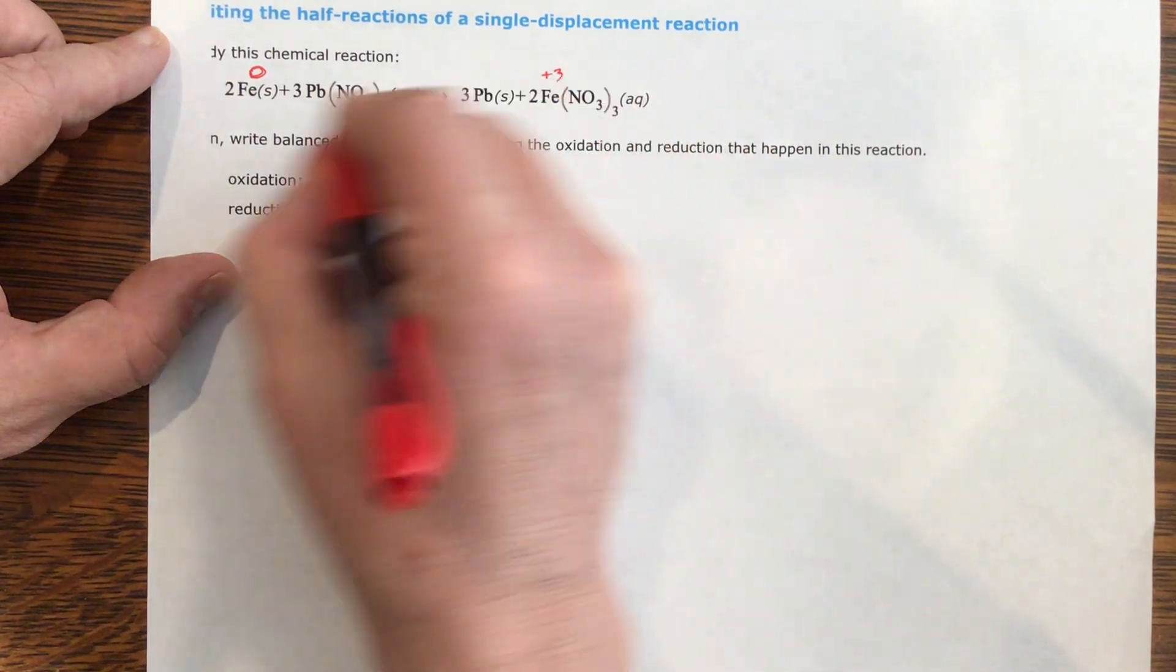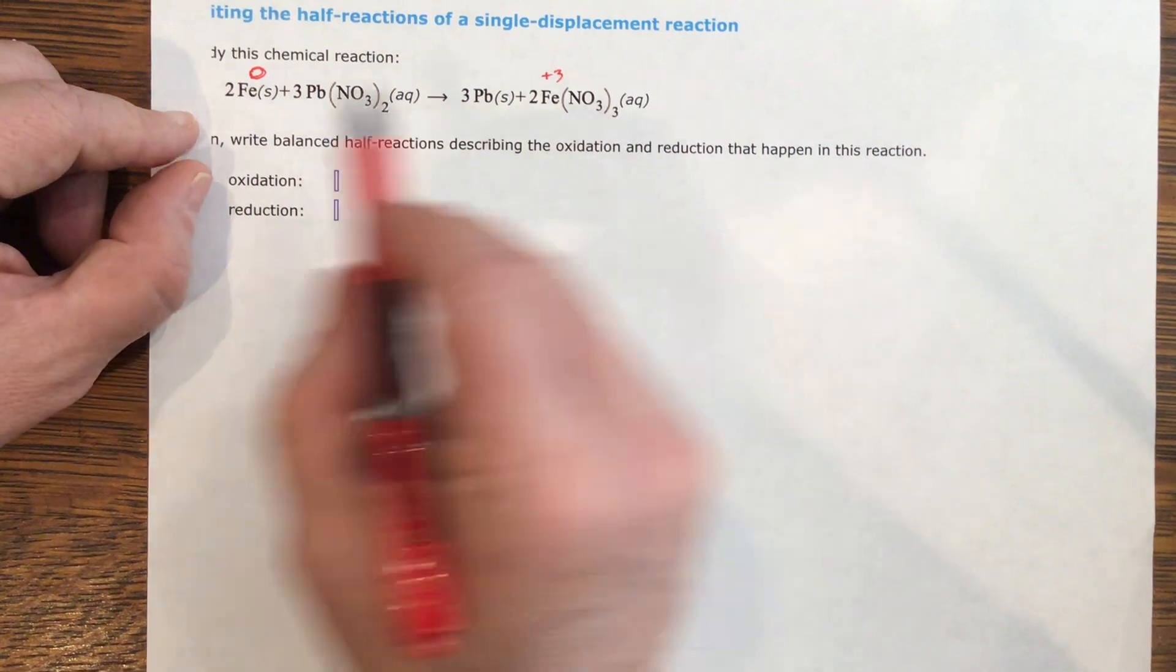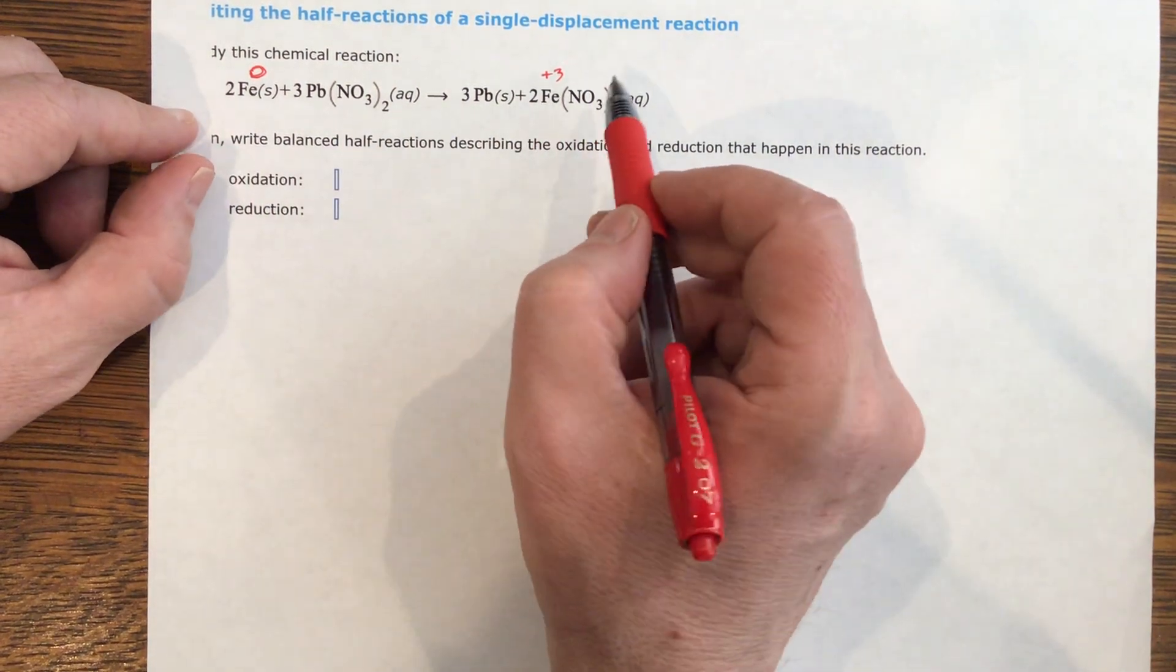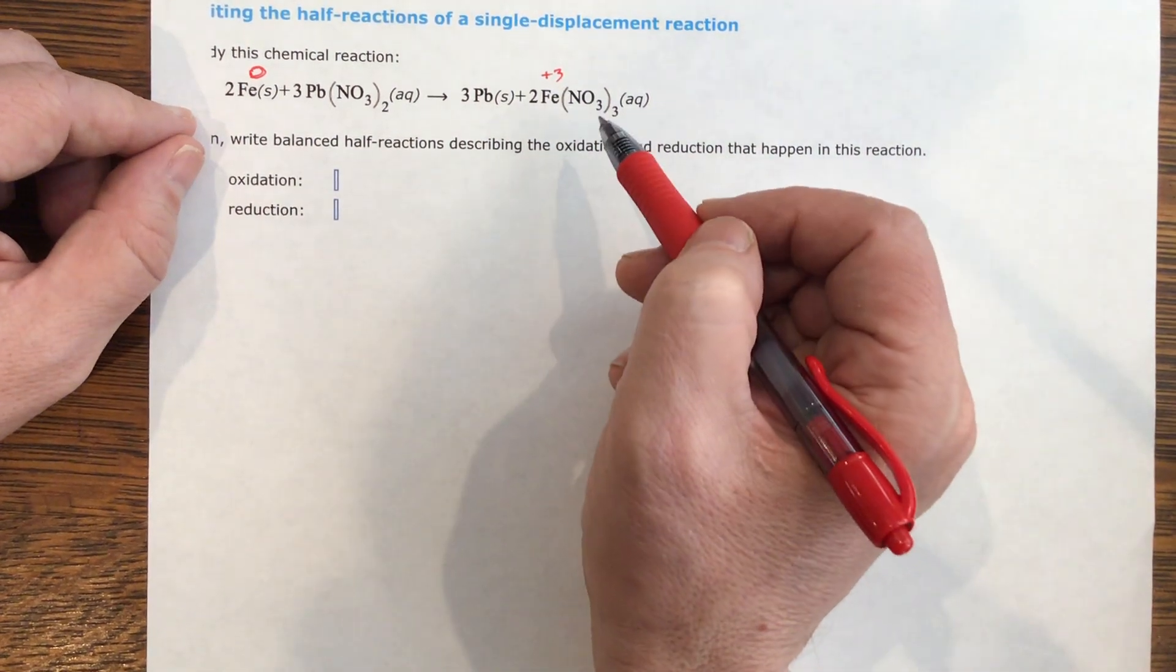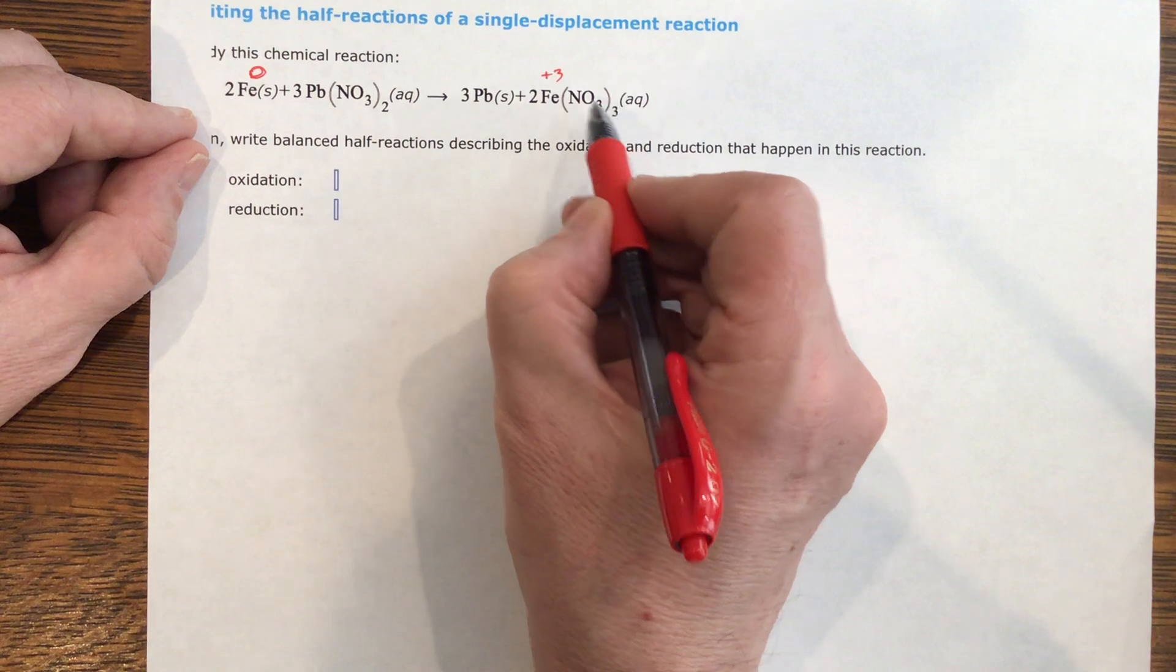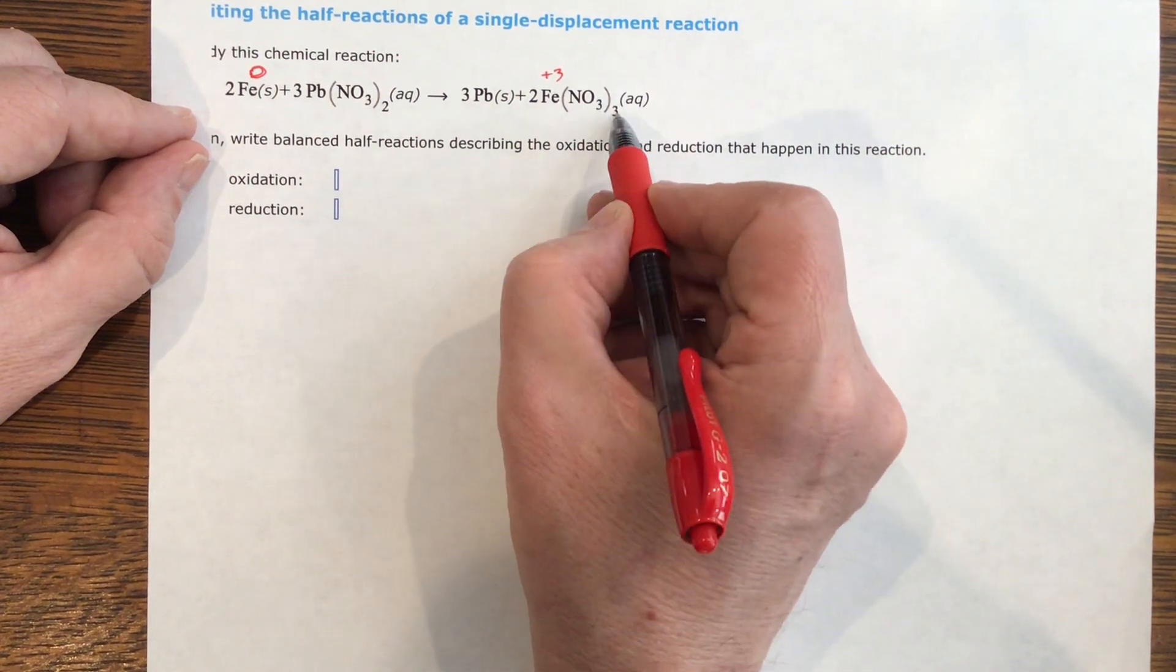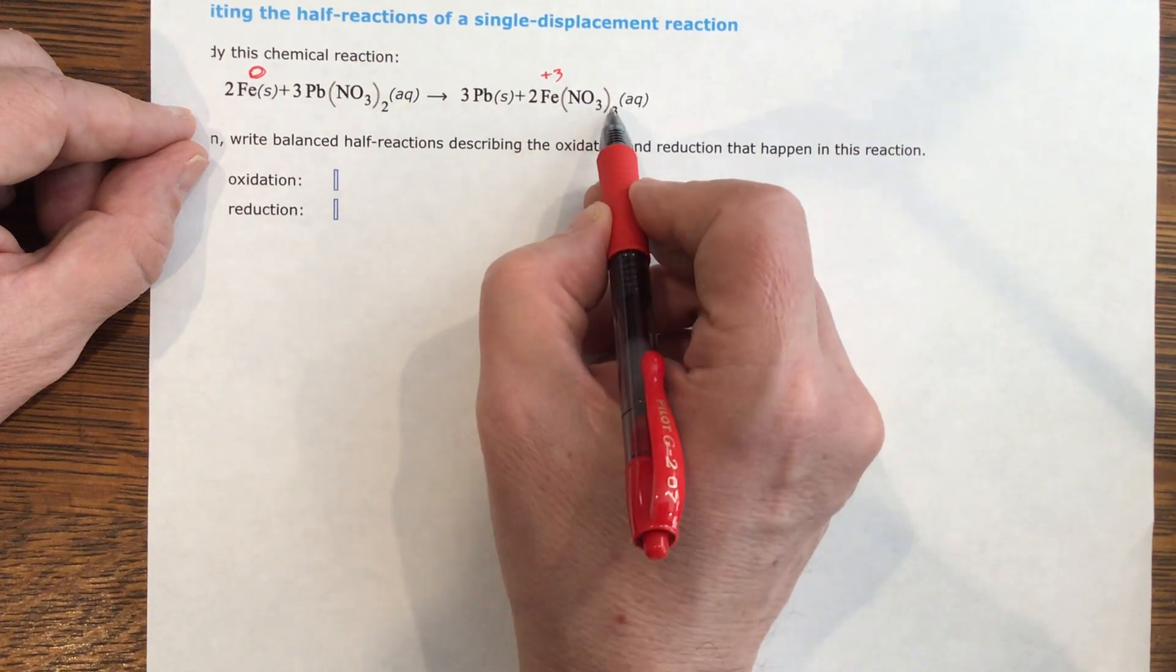You can ignore the coefficients in this balanced equation. When you balance an equation the other way, you'll have to add the coefficients, but just ignore them if you're trying to extract these half reactions from it. So if this is negative one, which is nitrate, there's three negative ones. This is positive three to balance with three negative ones.